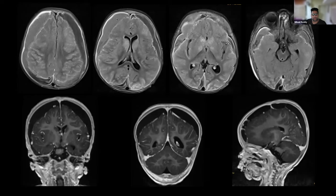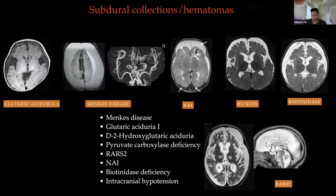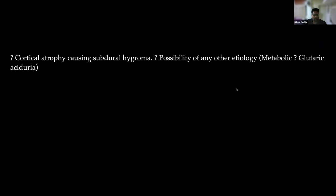SWI images show blood products in the subdural space along the right side and lateral aspects. No parenchymal hemorrhage. Post-contrast study shows predominant dural enhancement. FLAIR-contrast sequences show confluent dural enhancement. Some leptomeningeal enhancement along the occipital and posterior temporal regions. Septations in subdural collections on T1 post-contrast. The clinical question: is this acquired HIV-related or should we consider an inborn error of metabolism given developmental delay?